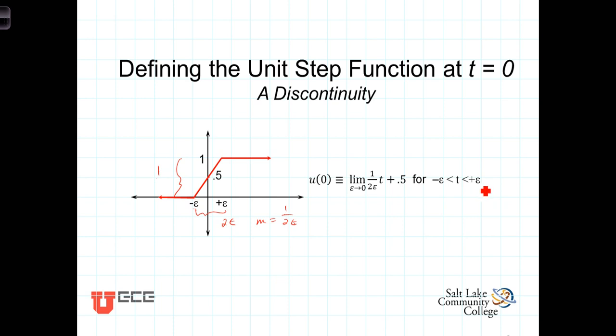Now, we apply the limiting argument to give us the value of the step function at t equals zero. We say that the limit as epsilon approaches zero. So, as these small movements away from the origin get smaller and smaller, moving in, the slope, which is one over two epsilon, gets greater and greater, and in the limit as epsilon approaches zero, this line approaches a vertical line with an infinite slope,